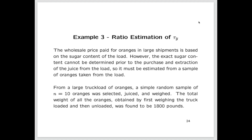Now let's look at an example: ratio estimation of τ_y. The wholesale price paid for oranges in large shipments is based on the sugar content of the load. However, the exact sugar content cannot be determined prior to purchase, since extracting the juice uses up the oranges. So we select a simple random sample, extract the juice, and use ratio estimation to estimate the total amount of juice in the entire load.